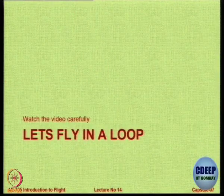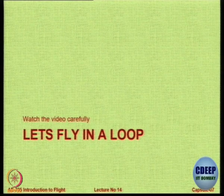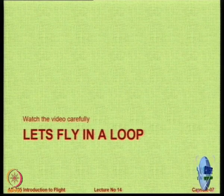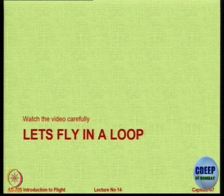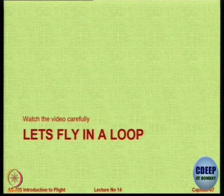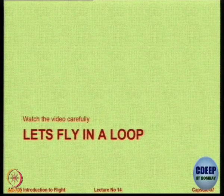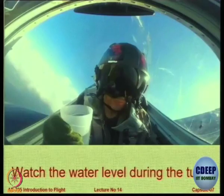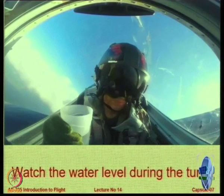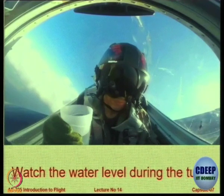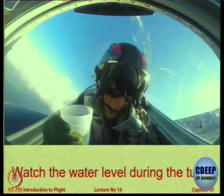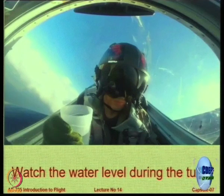I want you to watch a video very carefully. In this video the pilot is going into what is called a vertical loop, which is actually a circle. You can see that by looking at the background, but I want you to focus your attention to the extent possible on the glass that he is holding. The pilot is holding a glass of water, and as the pilot goes into a turn you should be able to make out whether it is a vertical turn or a horizontal turn.